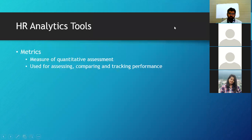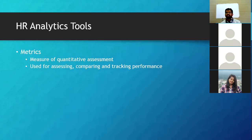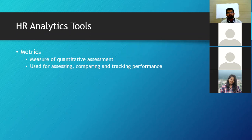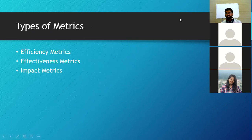Next one is the HR analytics tools. We are almost at the end of this particular module. HR analytics tools — basically the main tool that most people use is matrix. What is matrix? It's a measure of quantitative assessment. It measures the performance of various variables quantitatively. It is used for assessing, comparing, and tracking performance. We use matrix for assessing performance, comparing performance, as well as tracking future performance — whether you are going as per the set standards or not.